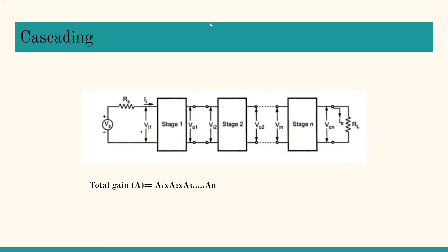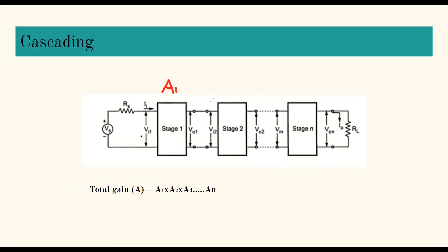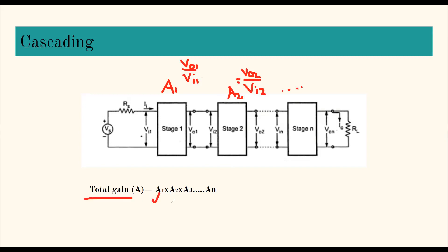Before discussing coupling types, let us look at gain. The gain of the first stage, A1, equals output voltage V01 divided by input voltage Vi1. The gain of the second stage, A2, equals the output voltage of stage 2 divided by the input voltage of stage 2, and so on. The total overall gain is A1 multiplied by A2 multiplied by A3, and so forth up to the last stage. For example, if N equals 5, total gain equals A1 × A2 × A3 × A4 × A5.